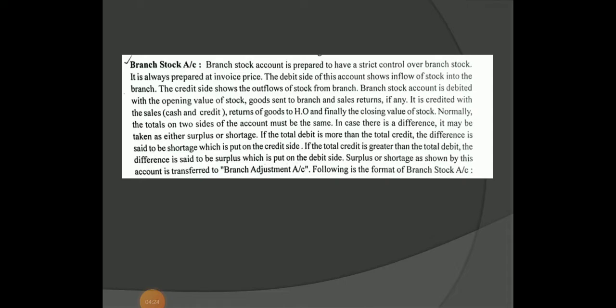The stock account is made by the stock. The invoice price is made by the invoice price. The credit side is made by the stock account. We have an inflow and outflow. We have a specimen of a branch account — if we have a debit or credit, we have a balance.